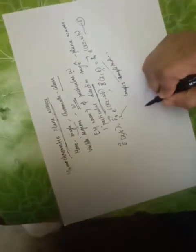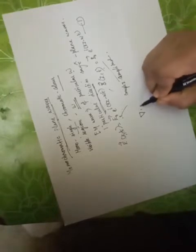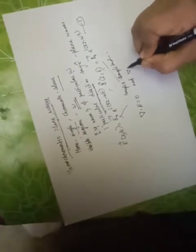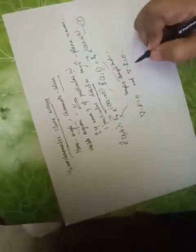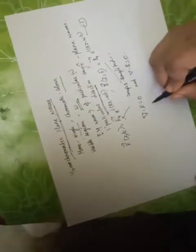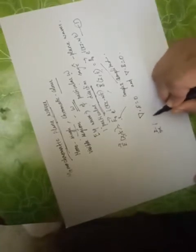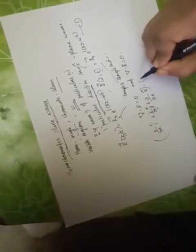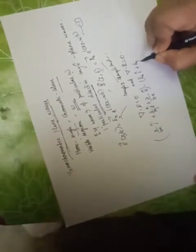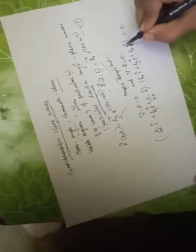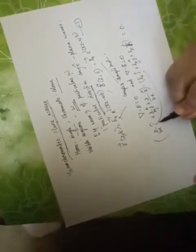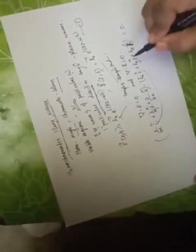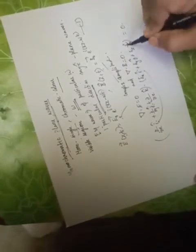Now we are going to consider Maxwell's equations: del dot E equals 0 and del dot B equals 0. It follows that del, written as (∂/∂x)î + (∂/∂y)ĵ + (∂/∂z)k̂, dotted with E having x, y, and z components equals 0. Taking the dot product: î·î = 1, î·ĵ = î·k̂ = 0, ĵ·ĵ = 1, k̂·k̂ = 1, and all cross terms are zero.